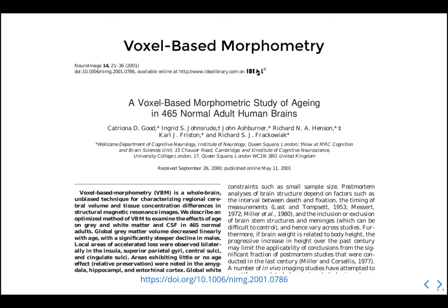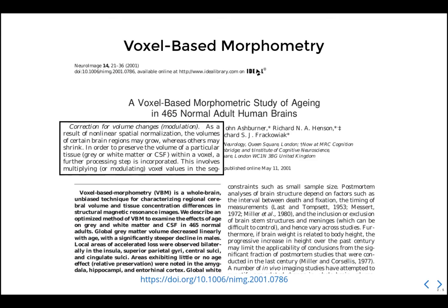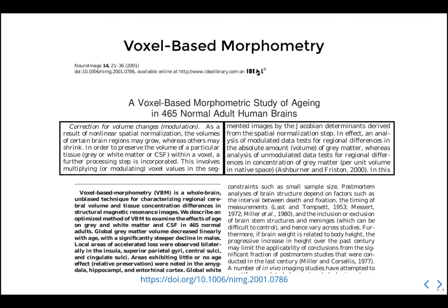Two years later came the first official voxel-based morphometry study on 465 normal adults from London, done with SPM. The key addition was modulation: the result of non-linear spatial normalization may grow or shrink brain region volumes when transforming from single subject to template. By multiplying voxel values of the gray matter by Jacobian determinants — how much you changed it to reach the template — you get a regional measure of absolute volume. This is VBM. Without modulation you get regional differences in concentration of gray matter.